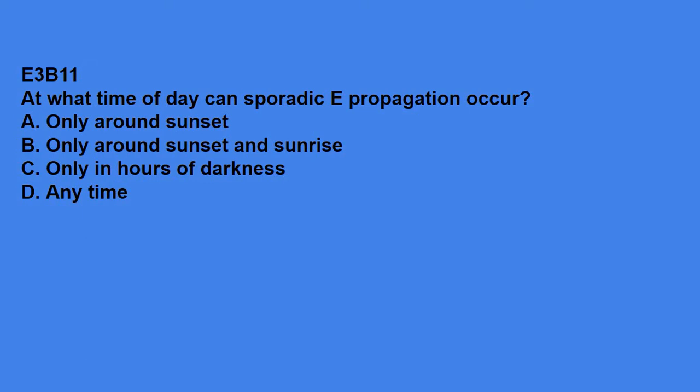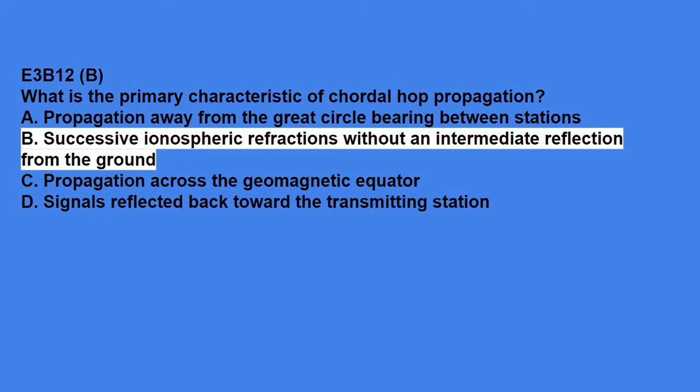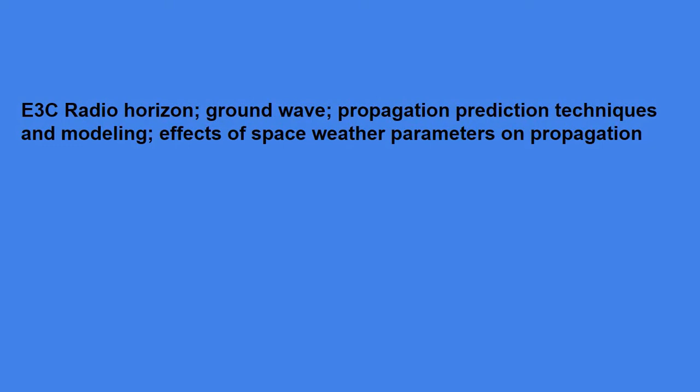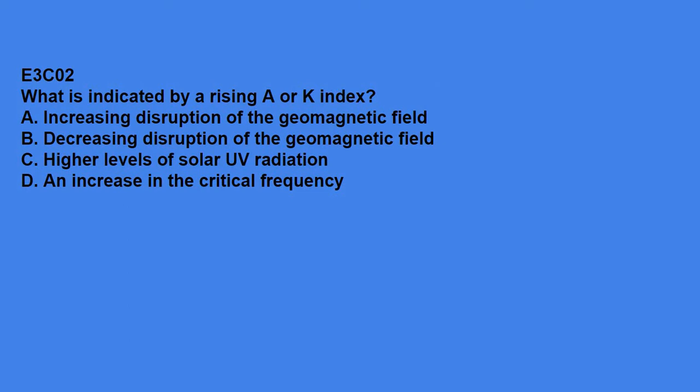E3B11, at what time of day can sporadic E propagation occur? The answer is any time. E3B12, what is the primary characteristic of chortle hop propagation? Successive ionospheric refractions without an intermediate reflection from the ground. E3C covers radial horizon, ground wave, propagation prediction techniques and modeling, effects of space weather parameters on propagation. E3C01, what does the radiocommunication term ray tracing describe? It describes modeling a radio wave's path through the ionosphere. E3C02, what is indicated by a rising A or K index? And that means increasing disruption of the geomagnetic field.